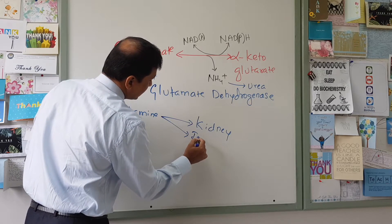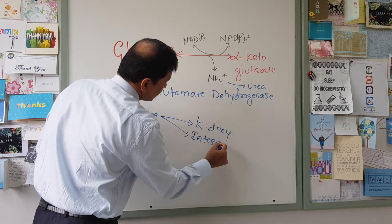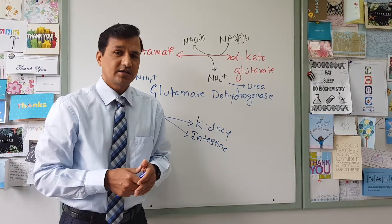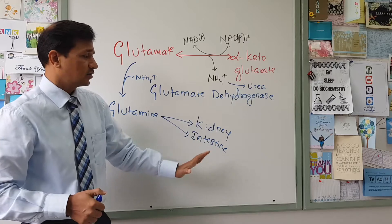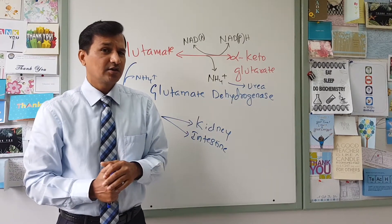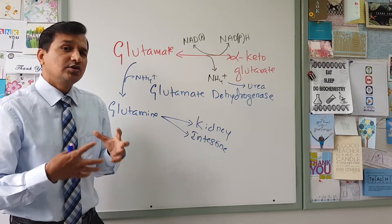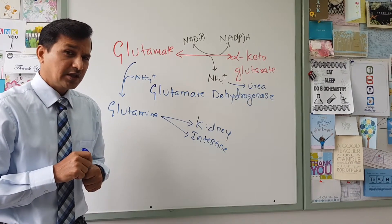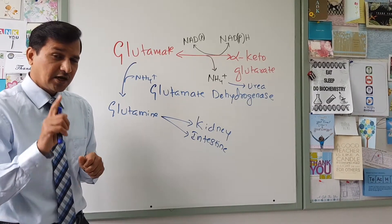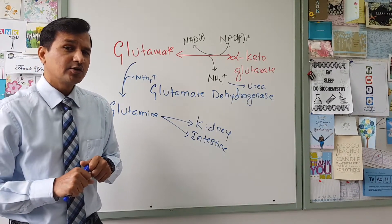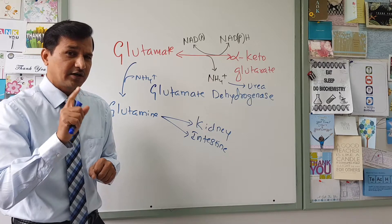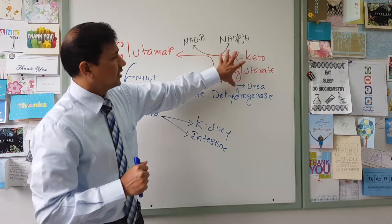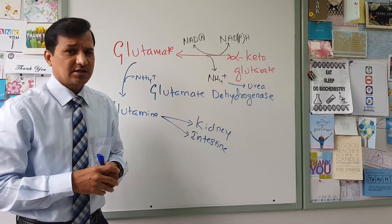Glutamine can also be taken up by the intestine for energy purposes. The intestine converts glutamine to glutamate, glutamate to alpha-ketoglutarate, and uses that alpha-ketoglutarate for energy. The ammonium ion released during that process is converted to urea — note that the intestine can also synthesize urea to a certain extent, though not as much as the liver.